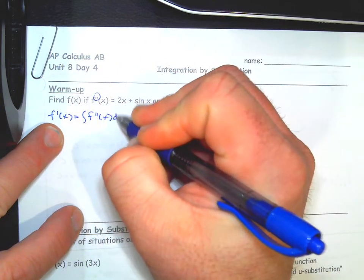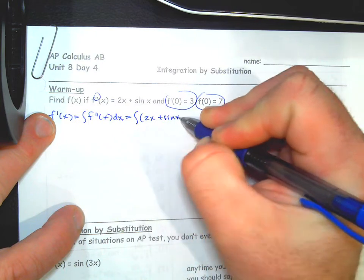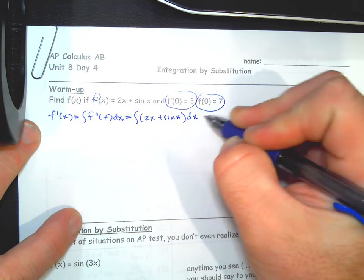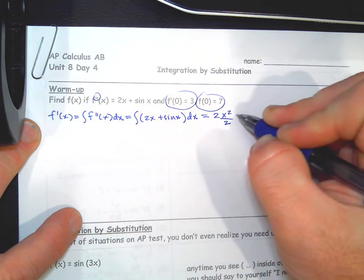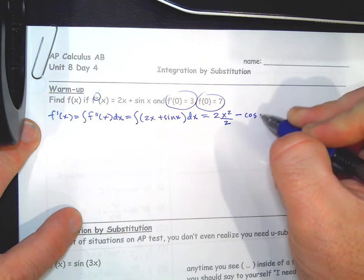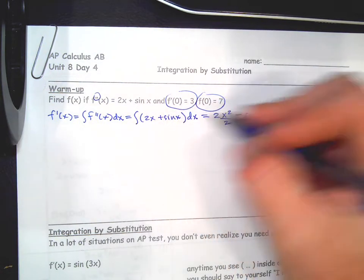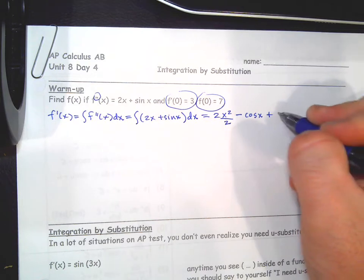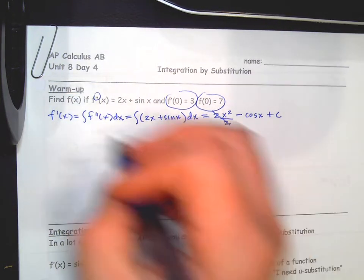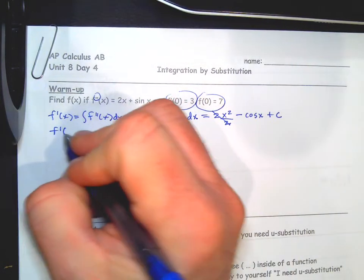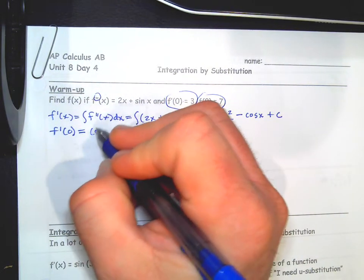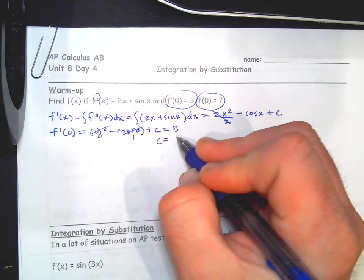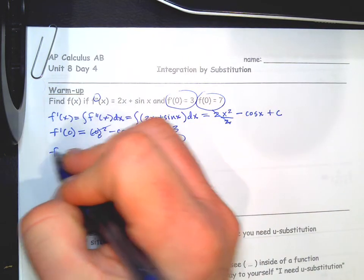Go ahead and pause the video and try the problem yourself. Assuming you've tried it — the first derivative is going to be the integral of the second derivative dx. That's going to be the integral of (2x + sin x) dx. The antiderivative is 2x²/2 minus cosine x, because the derivative of cosine is negative sine, which we don't want, so we need an extra negative, plus C.